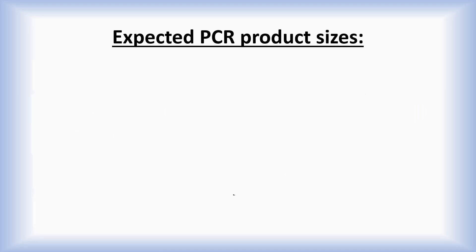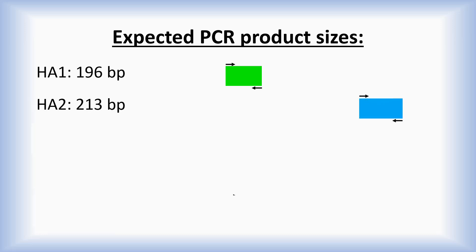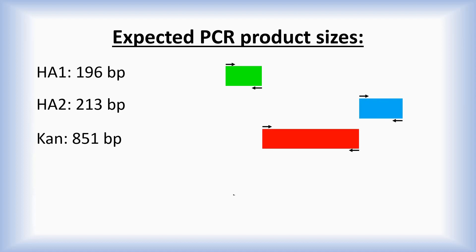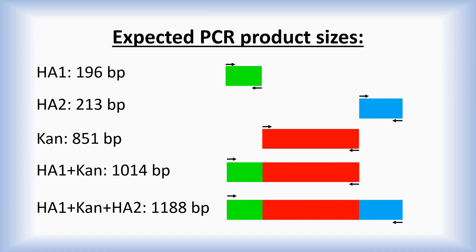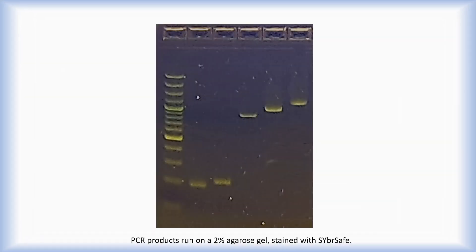Here are the expected PCR product sizes: Homology Arm 1, Homology Arm 2, Can, Homology Arm 1 with Can, and the final construct consisting of Can and Homology Arms 1 and 2. If the PCR products are run on an agarose gel along with a 100 base pair ladder, specific base pair sizes are highlighted in blue.